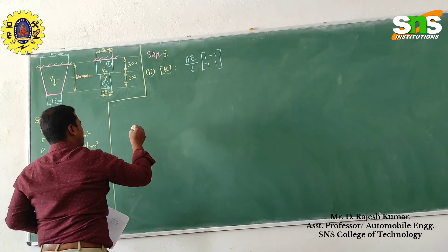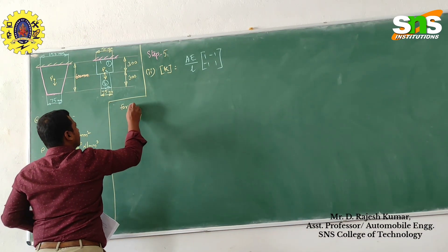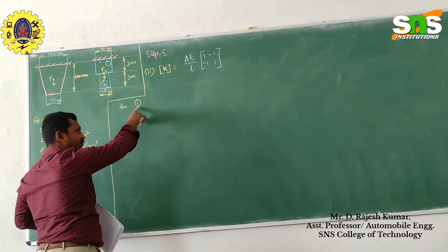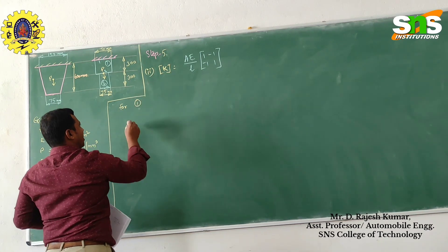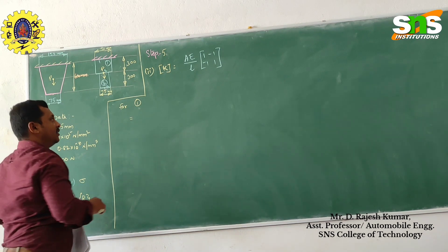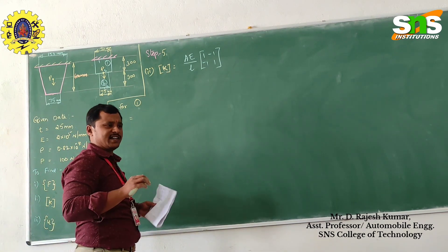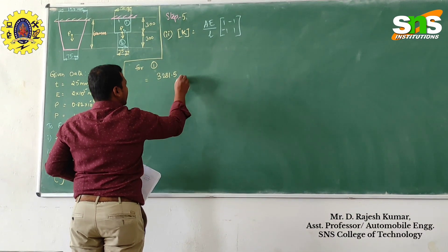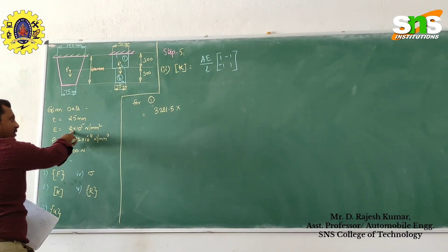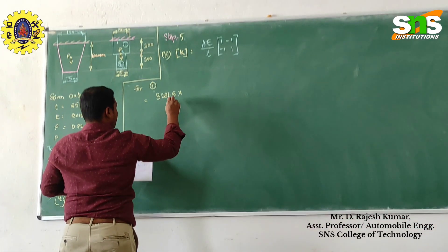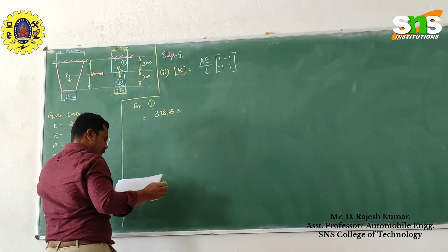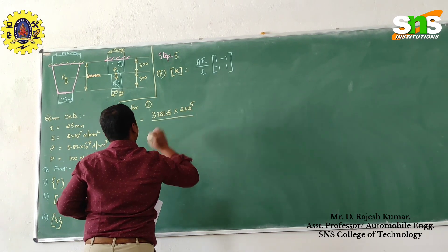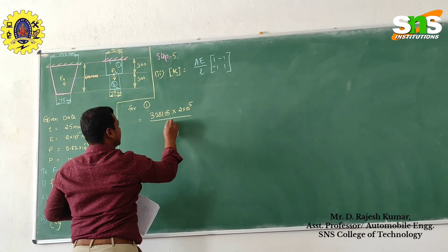We are going to find the stiffness matrix for elements 1 and 2. For element number 1 — a number in a circle represents the element — what is the average area of element 1? The average area is 1.5 × 10^(-4) to 6, given as 0.25. So 0.25 into 2 into 10 power 5, divided by the length of element number 1, which is 300.